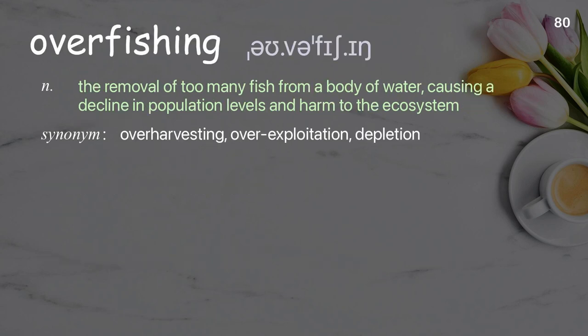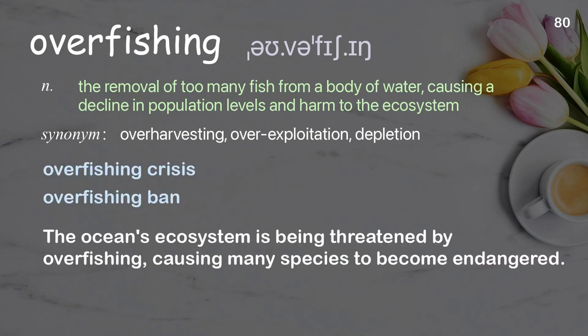Overfishing. The removal of too many fish from a body of water causing a decline in population levels and harm to the ecosystem. Examples: Overfishing crisis, overfishing ban. The ocean's ecosystem is being threatened by overfishing, causing many species to become endangered.